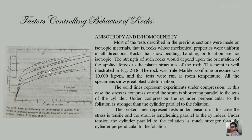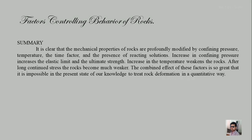If compression is parallel to the foliation, the rock is quite weaker; if compression is perpendicular to the foliation, the rock behaves a little stronger. Similarly, if extension is perpendicular to the foliation the rock is weaker, and if extension is parallel to the foliation the rock is comparatively stronger. So the orientation of the weaker plane relative to the direction of stress significantly controls the resultant deformation behavior of the rock.